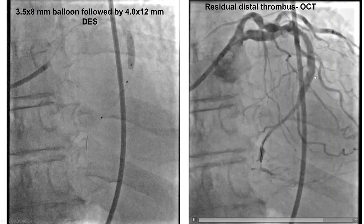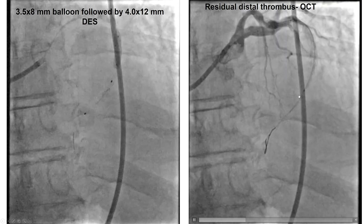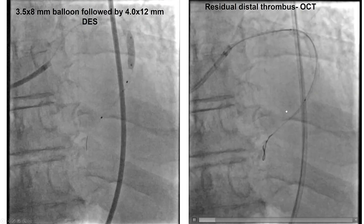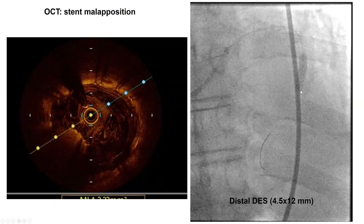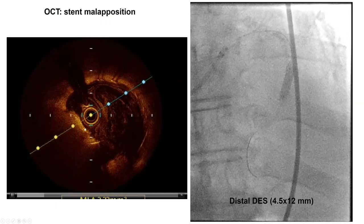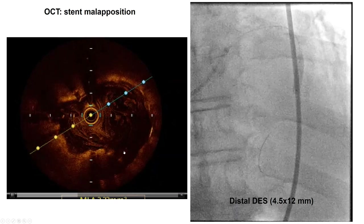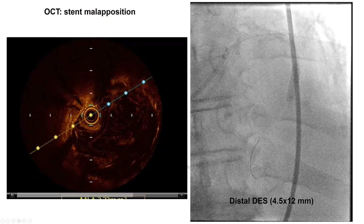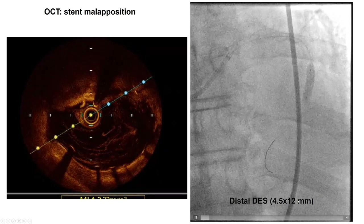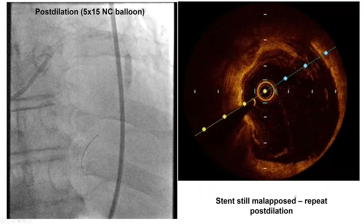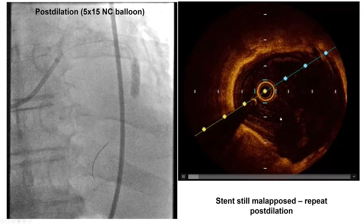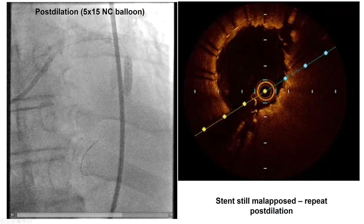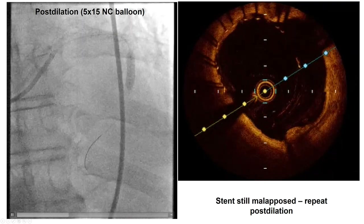However, the stent barely covered the target lesion, and this is one of the limitations of the filter — it precludes how far down you can go because you need the landing zone, which was limited in this particular patient. We did OCT showing improvement in the lumen, but there was significant stent malaposition; essentially the stent is swimming in this very large part of the vessel. That is why we placed an additional stent, 4.5 by 12, and repeated OCT. Because of the persistent malaposition, we finally post-dilated everything with a 5.0 by 15 mm non-compliant balloon.